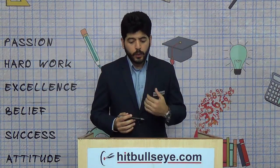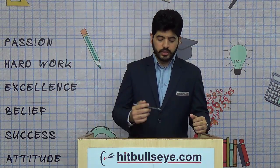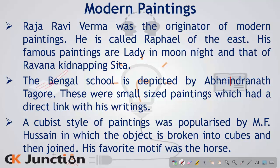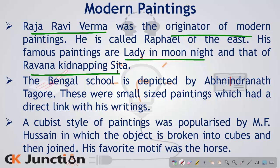After the dispersal of painters and the establishment of regional schools, we come to modern paintings. One of the most important originators of modern art in the country is Raja Ravi Verma, famously called the Raphael of the East, whose famous paintings include Lady in the Moonlight and Ravana Kidnapping Sita. The Bengal school of art by Abanindranath Tagore was also very famous, producing small-size paintings directly linked to Tagore's writings.